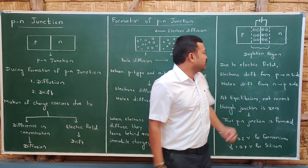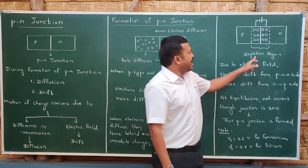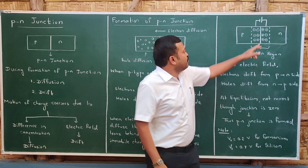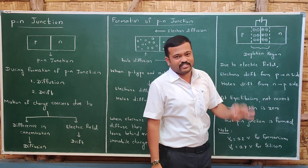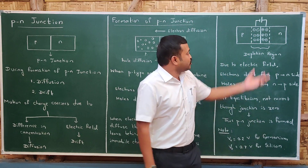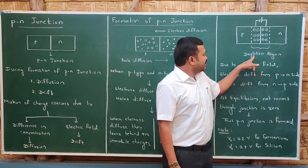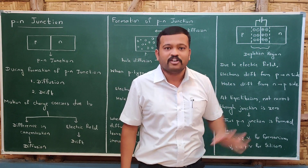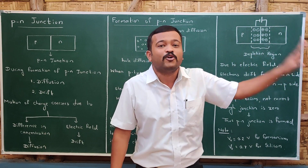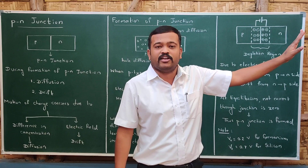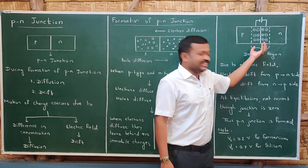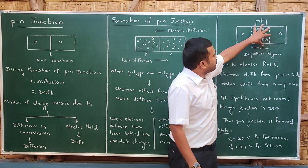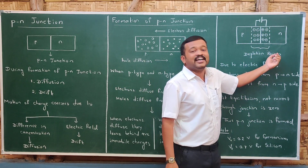A region is created at the junction called the depletion region — the region on either side of the PN junction where there are no mobile charge carriers; it is depleted of mobile charges. As an analogy: just as we might say a family is depleted of government jobs if no member works in government services, similarly there is a region between the PN junction in which there are no mobile charges — they are fixed and immobile. This region is called the depletion region.